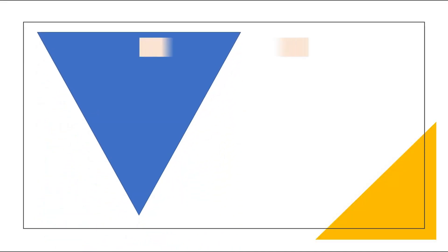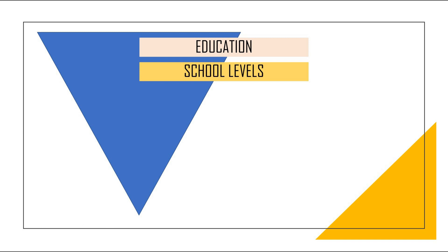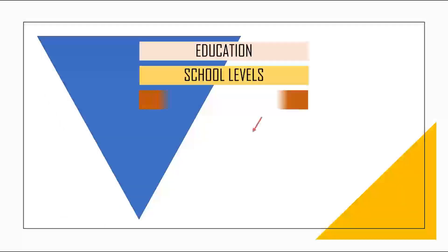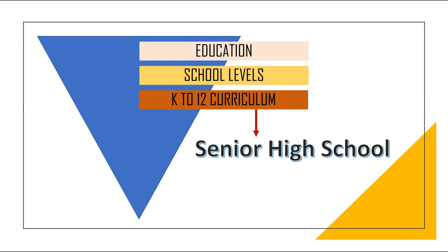Let me give you an example using the inverted pyramid. The broad topic is education. To make it specific, I came up with the next connected idea: school levels — kindergarten, elementary, junior high school, senior high school, or tertiary/college level. That is still broad, because the question is: what do you want to know about these educational levels? Would you like to understand the curriculum being implemented? So I have the K-12 curriculum, and to make it more specific, I chose the senior high school curriculum in particular.